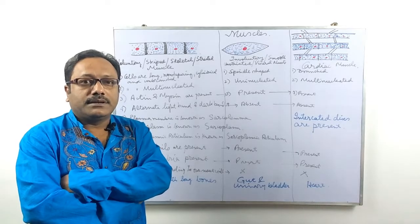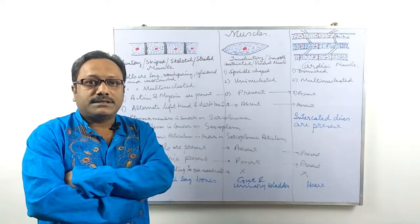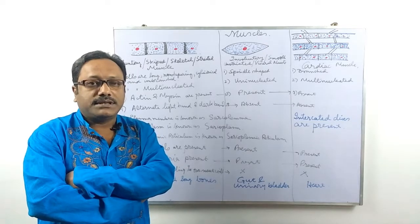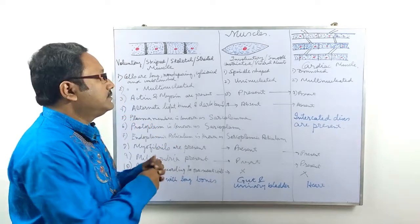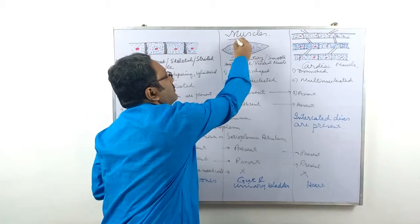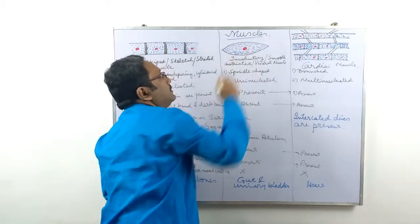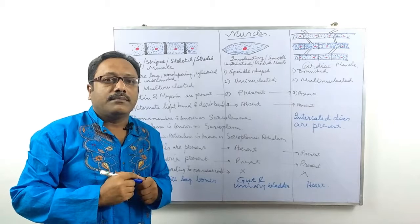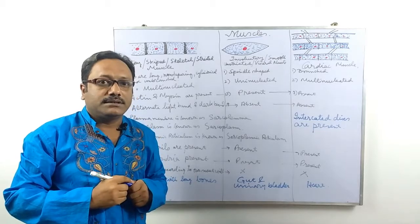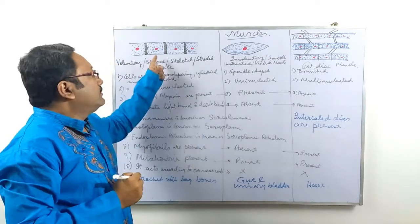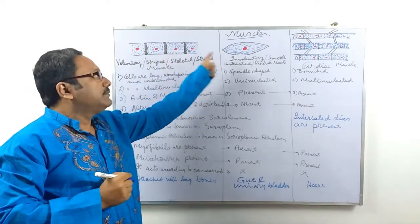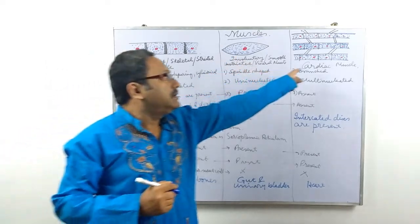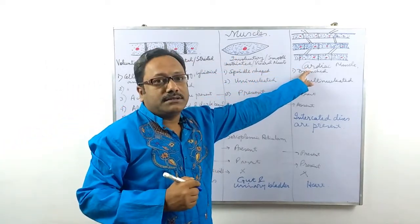Welcome back. Let us check out what are the important points which are present in the muscular tissue. In our body, there are three types of muscle cells: number one, voluntary muscles; number two, involuntary muscles; and number three, cardiac muscles.